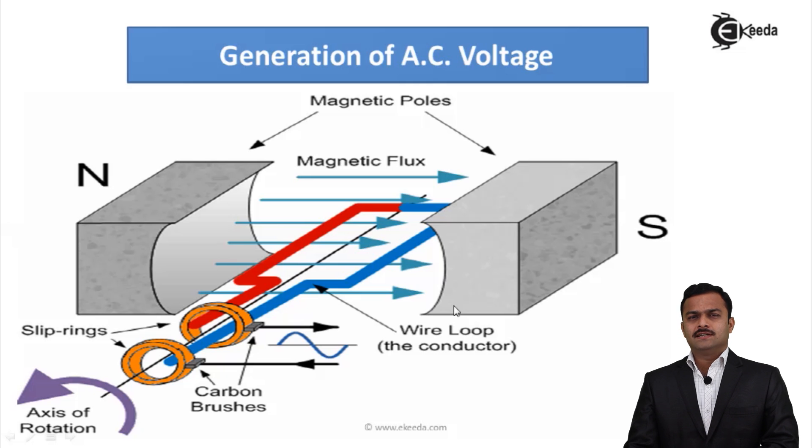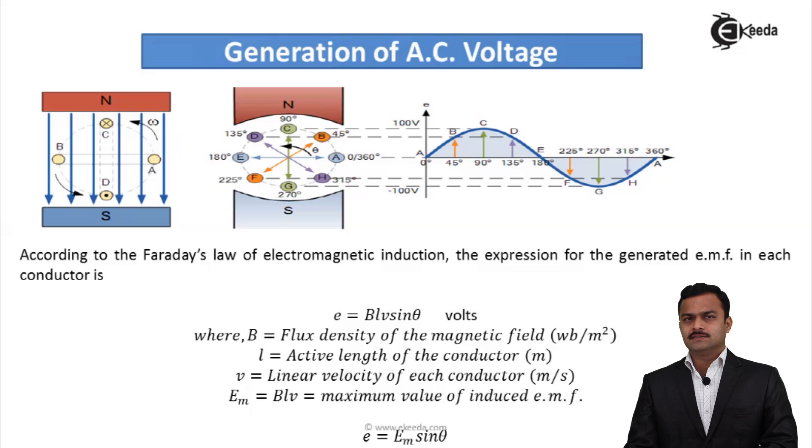First term is magnetic flux, also denoted as magnetic flux density B. Active length of conductor - that means that part of conductor which will come under the influence of magnetic field. And last, it is the velocity of the conductor when it rotates. So let's see how it is related to each other.